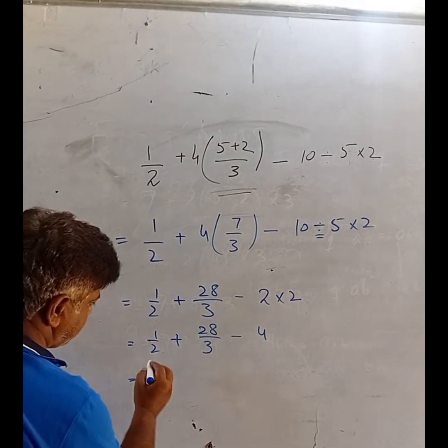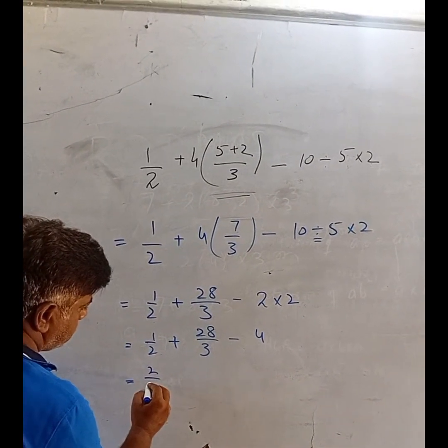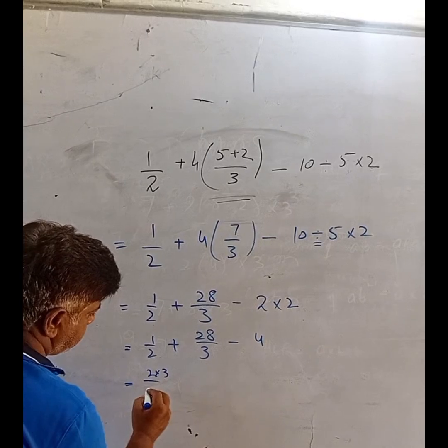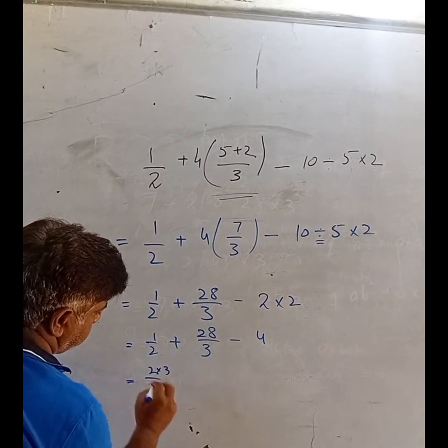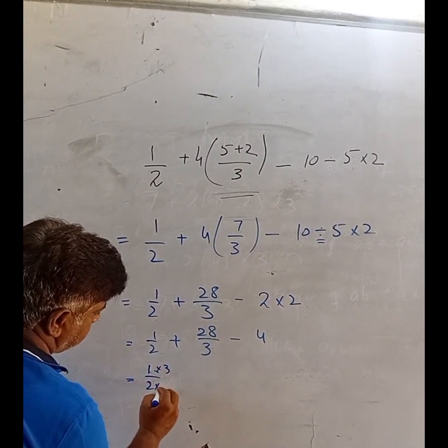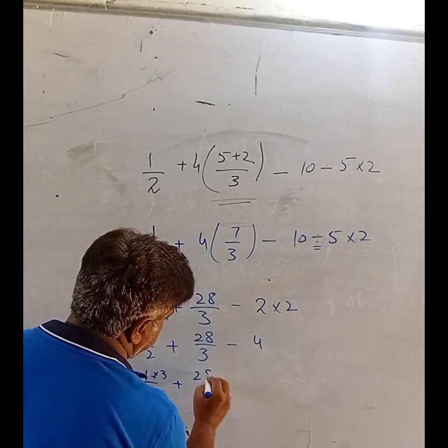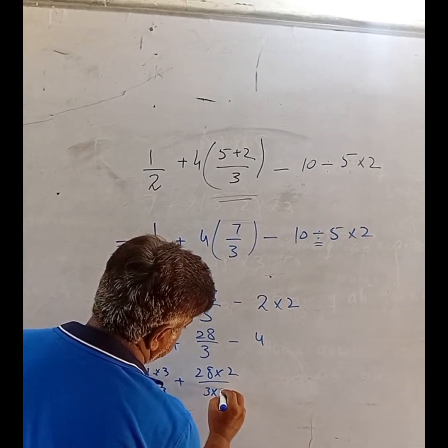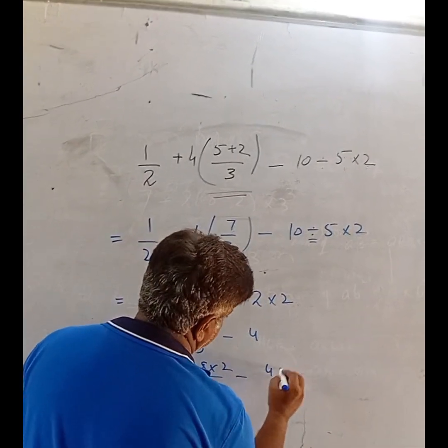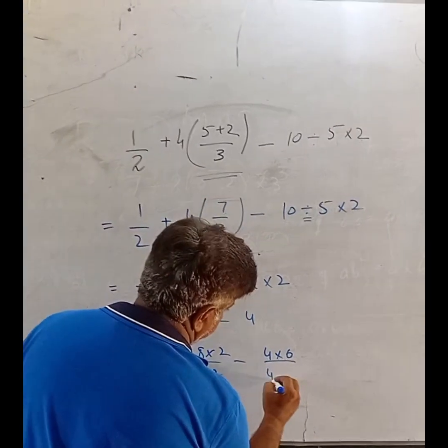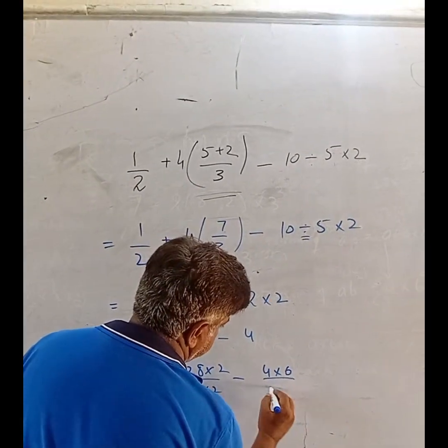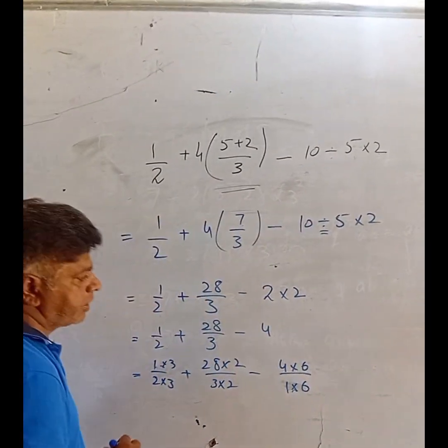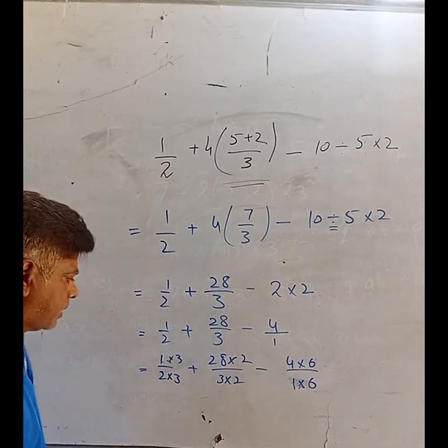Moving on: 1/2... multiplied by 3. So here is 1 by 2, multiplied by 3 plus 28, multiplied by 2, 3 multiplied by 2 minus 4, multiplied by 6 over 4 multiplied by 1 multiplied by 6. There is no denominator, there is 1. Let us solve it.